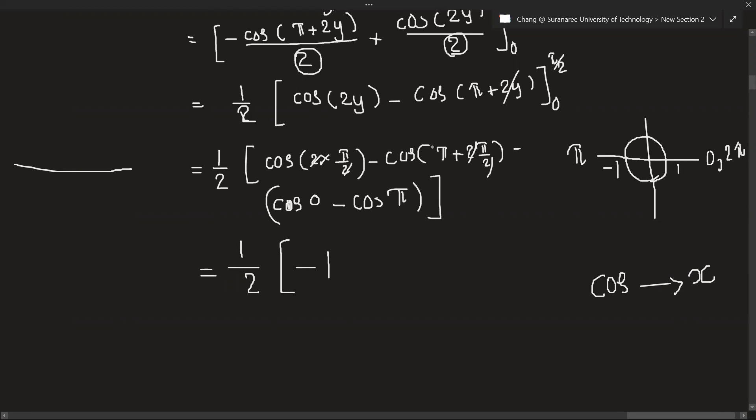Cos pi plus pi, we will get cos 2 pi. So let's look at cos 2 pi, so this is 1. But here is minus sign, don't forget. Minus, and this value is 1. And minus cos 0. Cos 0 is here, so it is 1.